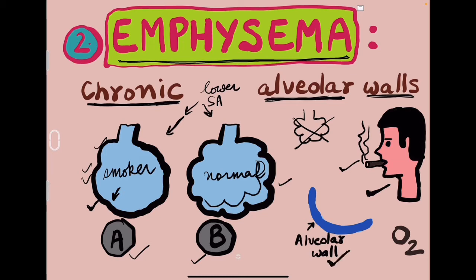Look at this alveolar wall. If smoke, tar, and similar substances accumulate here — because this person is a smoker who keeps inhaling cigarette tar and charcoal inside — all of this gets deposited here. Then oxygen can only diffuse and be absorbed in the remaining clear area. That area becomes useless for oxygen; oxygen won't be used there. This means a reduction in the oxygen-carrying capacity of the alveoli.